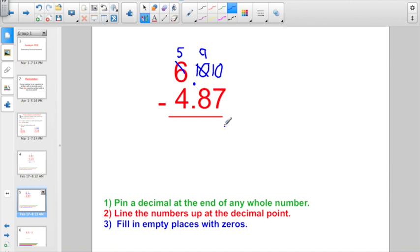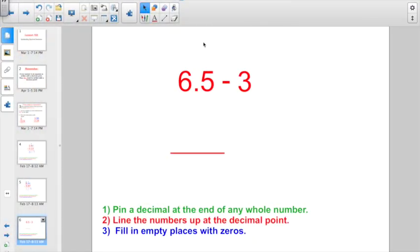Ten minus seven is three. Nine minus eight is one. Bring the decimal point straight down in the answer. Five minus four is one also for a final total of one and thirteen hundredths. One more like this.